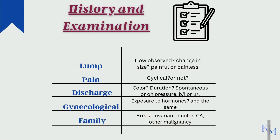History and examination. Here are some critical points of history that you should never miss. About any complaint, always ask how it started and any change up till now. For a lump, ask about its duration, how she noticed it, and whether it is painful or not. Pain is usually an indicator of benign disease.